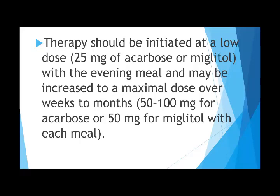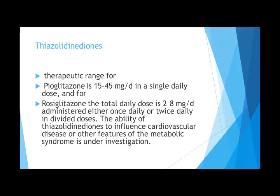Acarbose therapy should be initiated at a low dose of 25 mg with the evening meal, and may be increased over weeks to months to a maximum of 100 mg. The next group is thiazolidinediones: the major drug is pioglitazone, with rosiglitazone as another option. Pioglitazone is given at 15 to 45 mg per day as a single daily dose — starting at 15 mg, then increasing to 30 or 45 mg — and can be combined with sulfonylureas or biguanides.